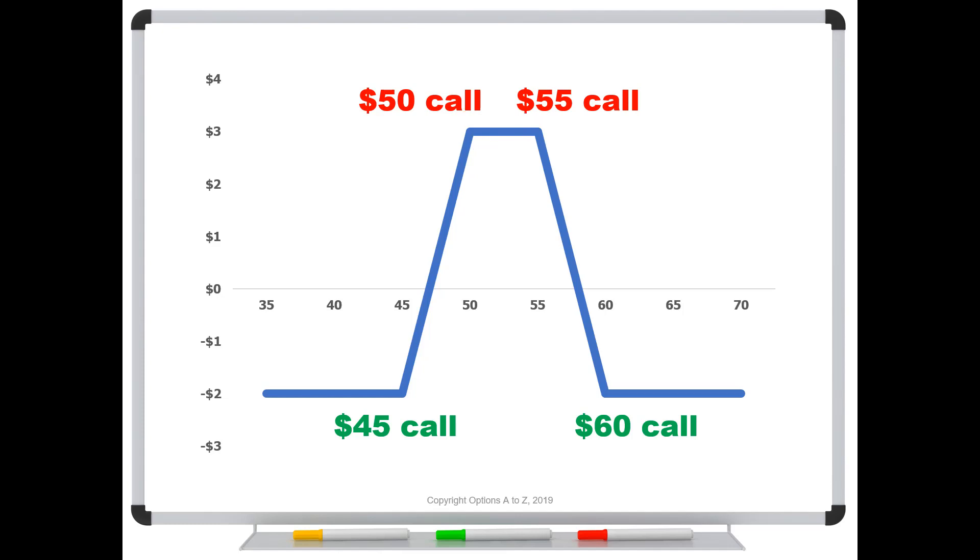Now watch what happens if I change these to puts. I'm just going to change the calls to puts. Just by doing that, nothing changed. It's exactly the same profit and loss diagram. The reason is that calls or puts, puts or calls, it just depends on how we delta hedge them. Anything you can create with a call, I can create with a put and vice versa. So yes, we get exactly the same profit and loss diagram. So why might I choose one over the other? It could be because of skews, but it's usually because of a morph.